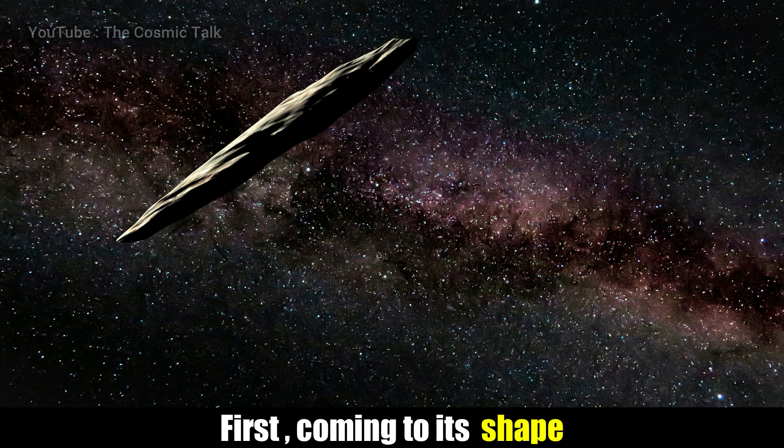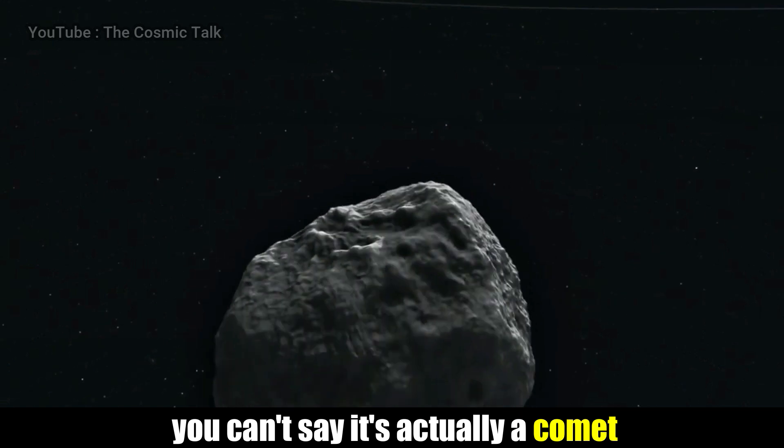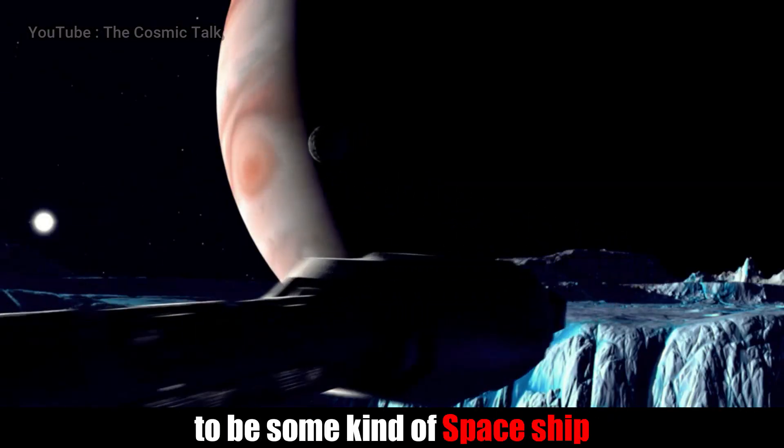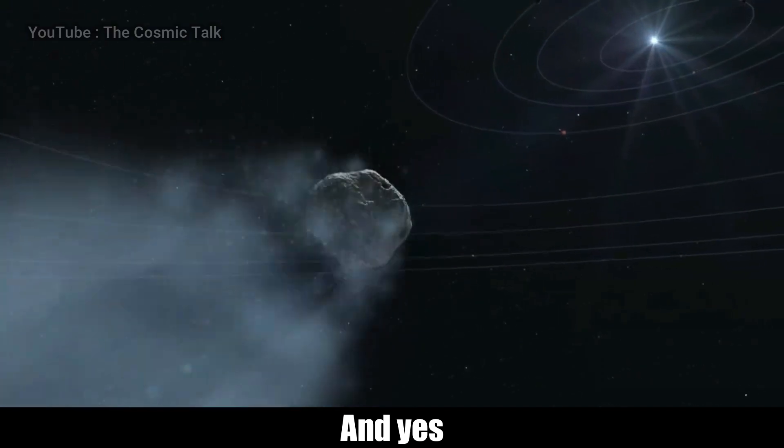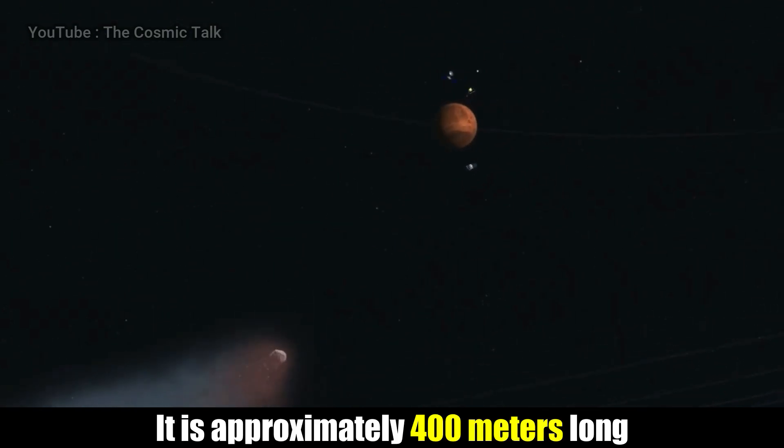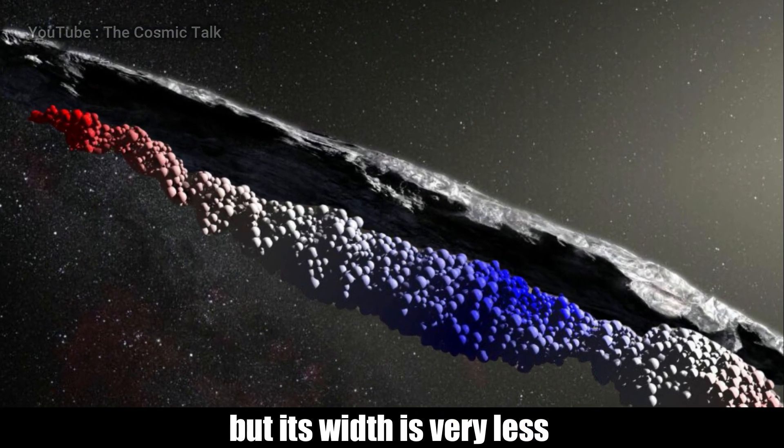First, coming to its shape. By looking at its highly elongated shape, you can't say it's actually a comet. Instead, you will think of it to be some kind of spaceship. And yes, this is true. Its elongated shape is very surprising. It is approximately 400 meters long, but its width is very small.